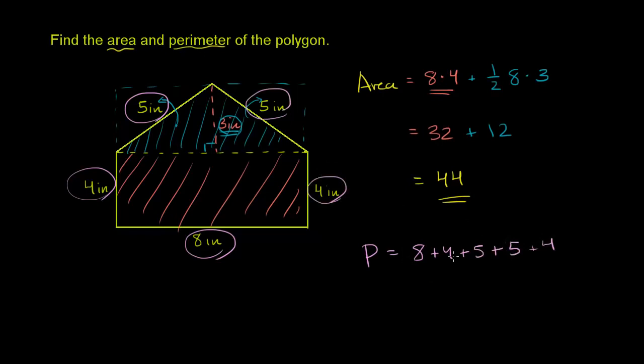So you have 8 plus 4 is 12. 12 plus 10, or 12 plus, well, I'll just go one step at a time. 12 plus 5 is 17. 17 plus 5 is 22. 22 plus 4 is 26. So the perimeter is 26 inches.